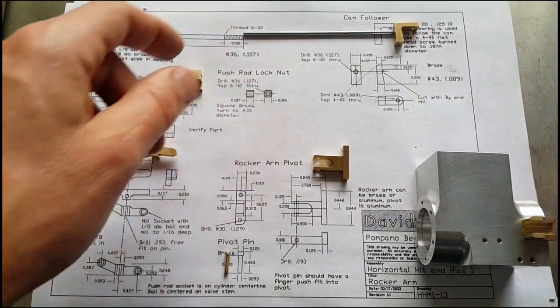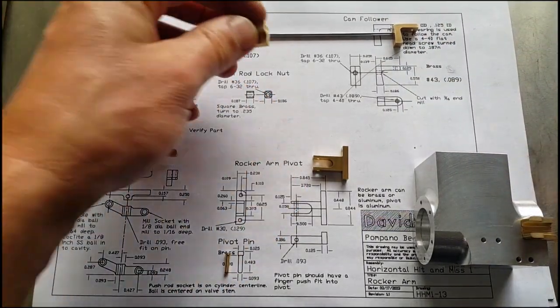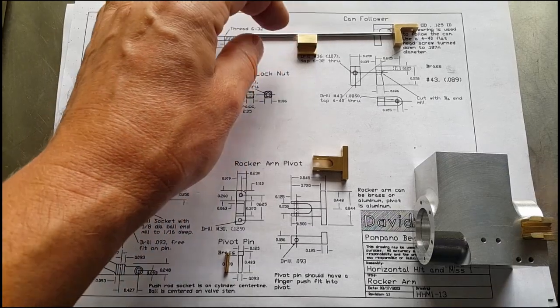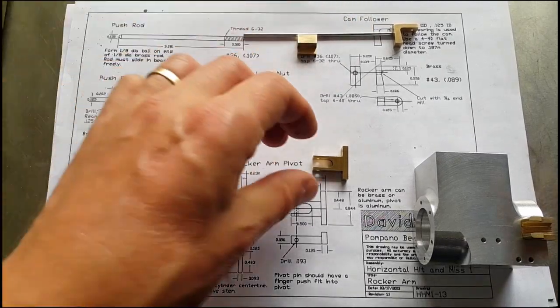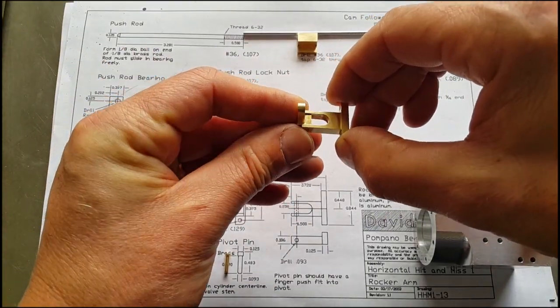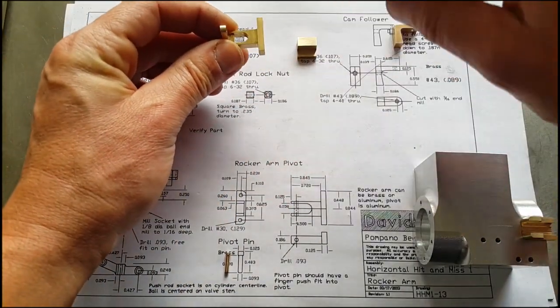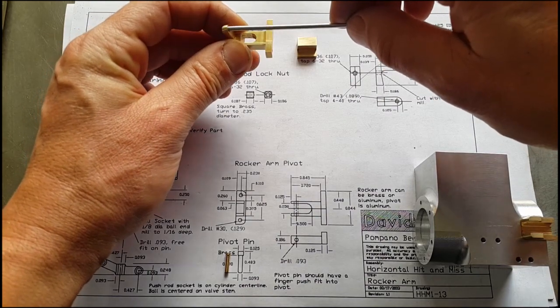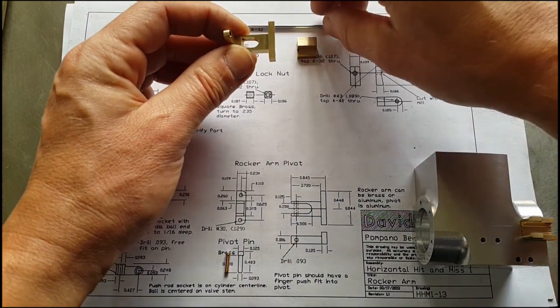At the other end of the push rod, we've got the bearing which sits roughly around here to support that arm. Then at the other end we've got the mechanism and the rocker arm, so the push rod is going to push here and open and shut the valve.